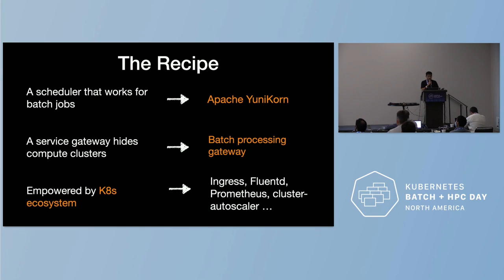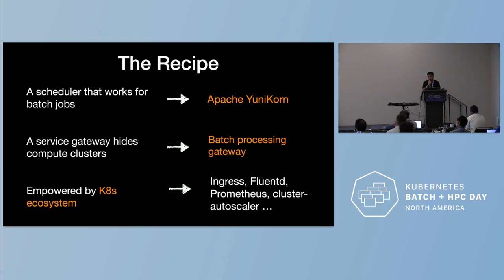The recipe here: we need a scheduler that works for batch jobs — in our case Spark jobs — which is why we chose Unicorn. The second component is the service gateway that gives users a very simple interface without dealing with infrastructure complications. The third part is the Kubernetes ecosystem, which has many great components for networking, logging, and metrics that we can leverage to keep improving our platform.